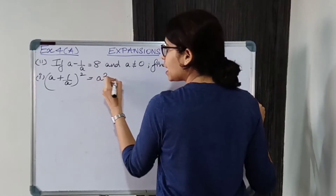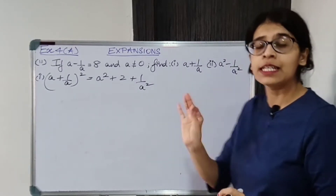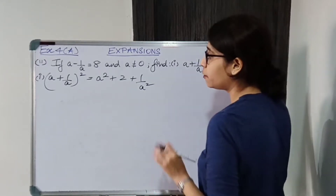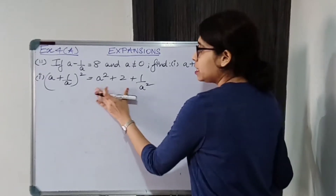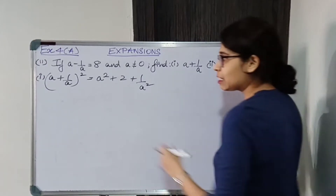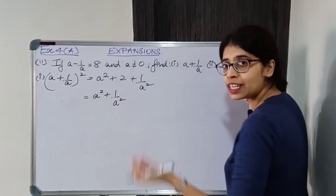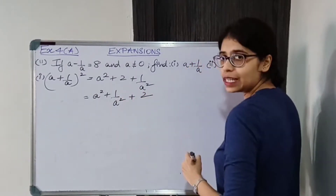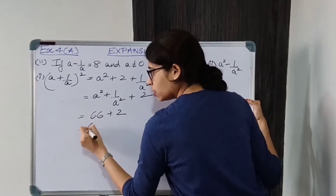A plus 1 upon A, the whole square expands to A square plus 2 plus 1 upon A square. You are supposed to know these identities — there are 6 identities to remember; refer to the expansions of squares video if you don't know. Now A square plus 1 upon A square, whose value I just found is 66 — we will group those two terms and substitute the value. So we get 66 plus 2.